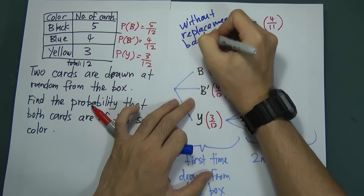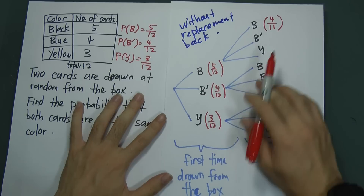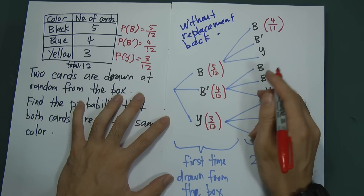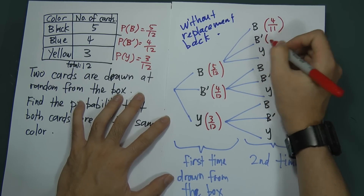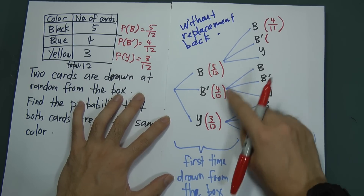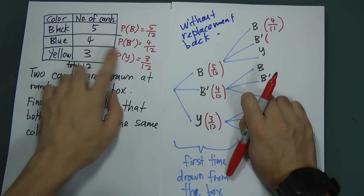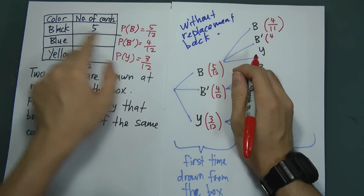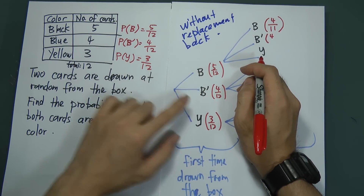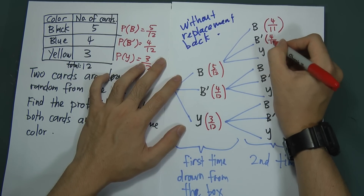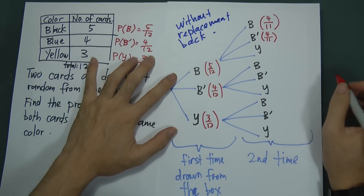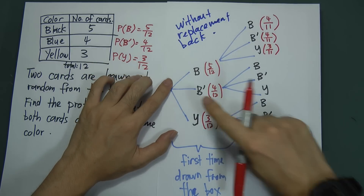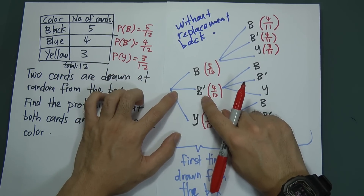Without replacement means the second draw total is minus one. So if the first time you get black, the second draw total is 11. You originally had five black cards; after taking one out, you only have four black left — so second draw black is 4 over 11. Blue remains 4 over 11 and yellow remains 3 over 11 for this branch.